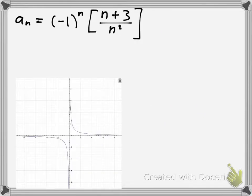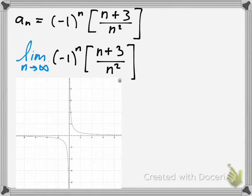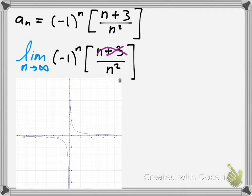Now we have another example. This time we have an alternating sequence, but notice how the function is different in that the denominator has a larger power than the numerator. We first take the limit of the function. Using the same shortcut: since we're approaching infinity, adding 3 has no effect. And now we have n over n-squared, so the n on top cancels and you get 1/n. So it's like taking the limit of an alternating sequence of 1/n.